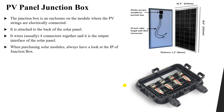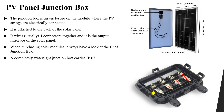When buying solar modules, we have to look at the IP, or Ingress Protection, rating of the junction box. It is represented by two numbers: one representing protection against liquids and the other representing protection against mechanical stress. A rating of IP67 is a very high ingress protection, meaning the junction box is well protected against water from rain and against mechanical stress.